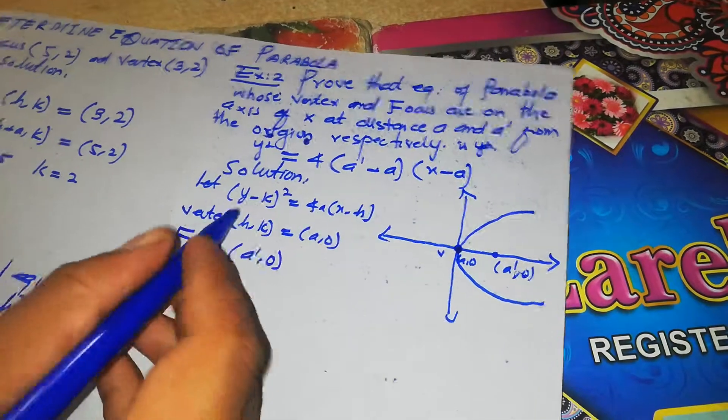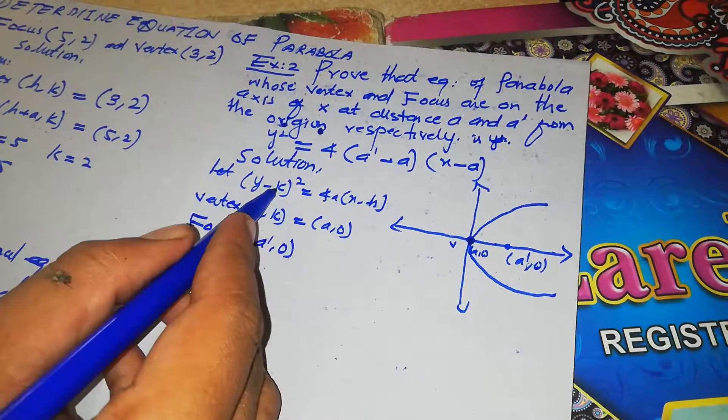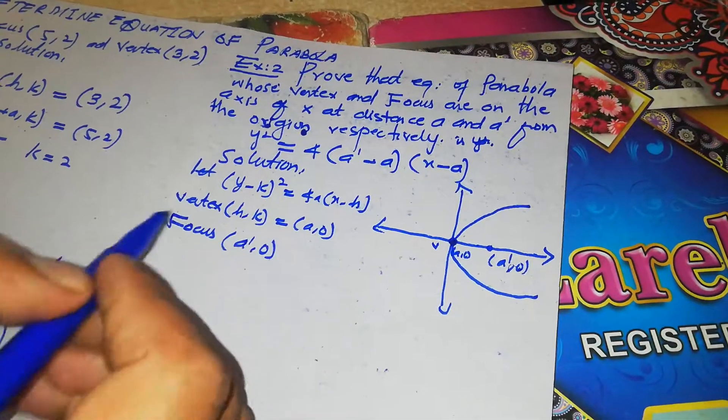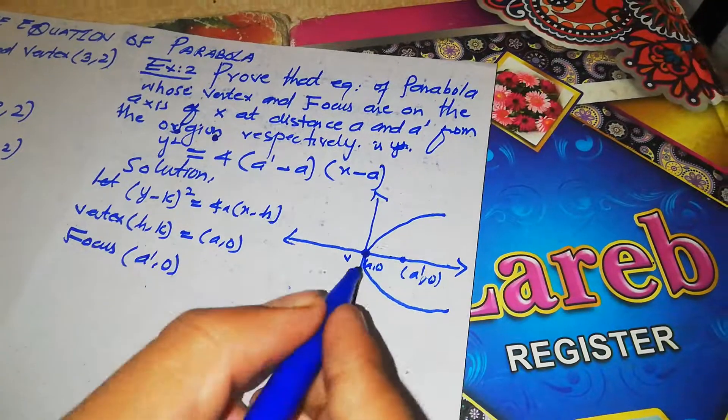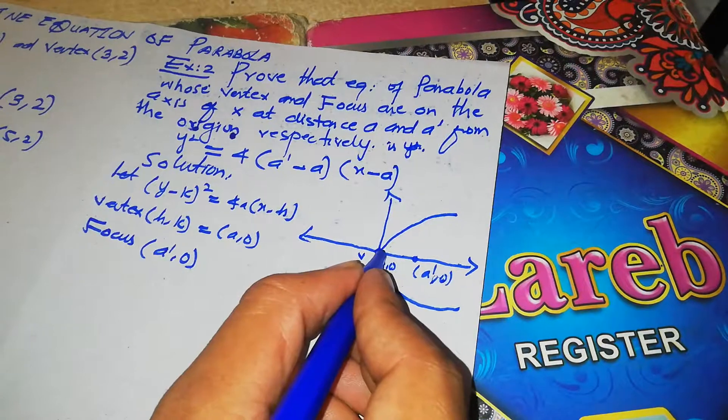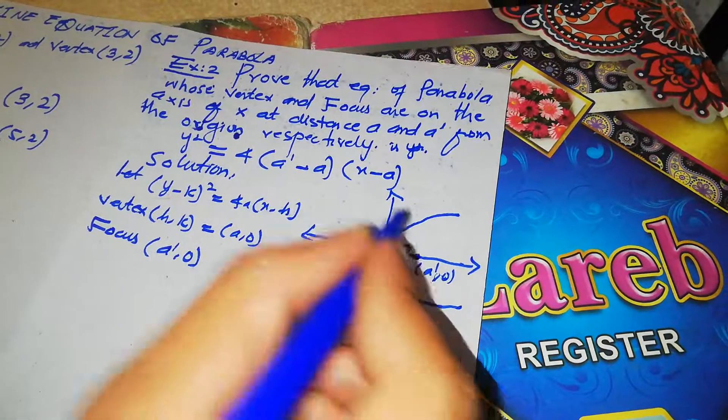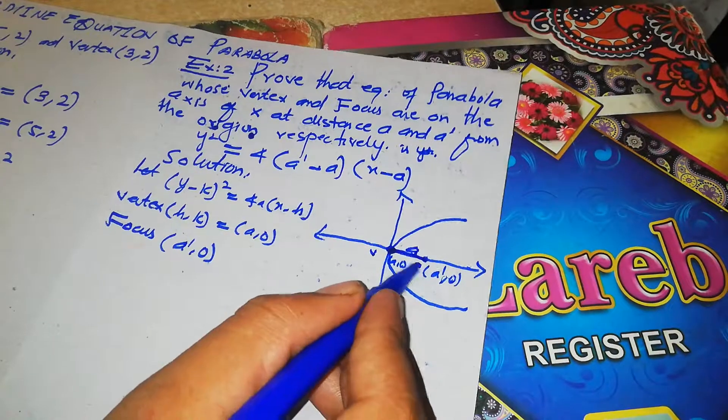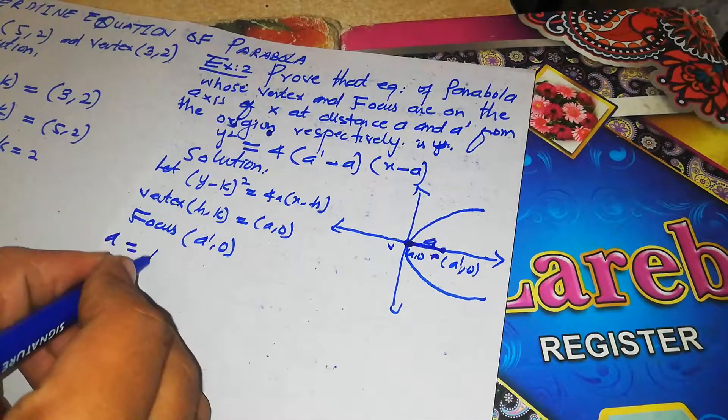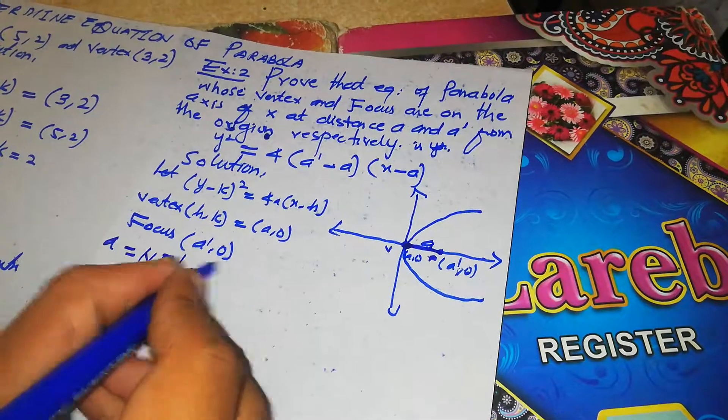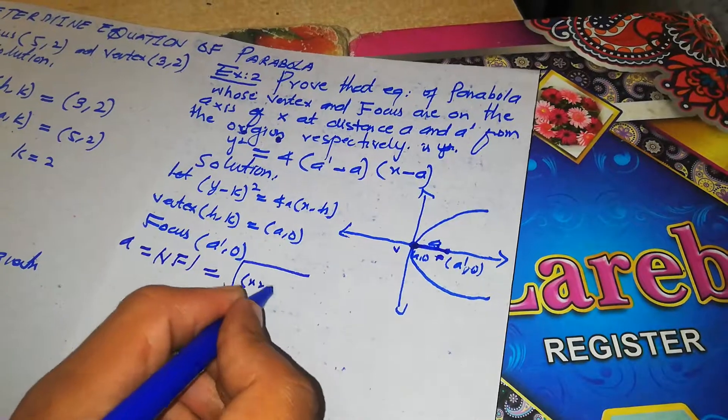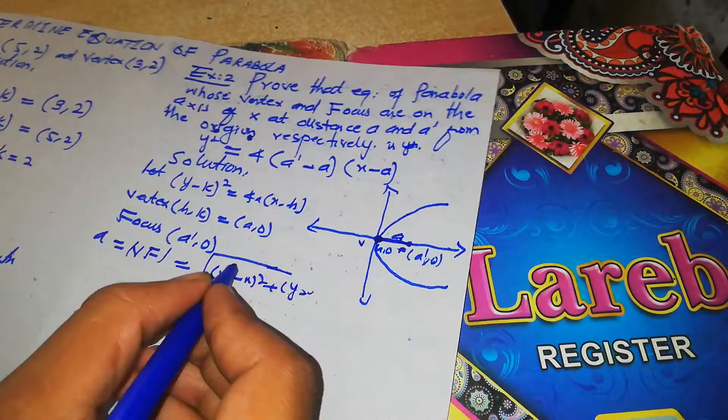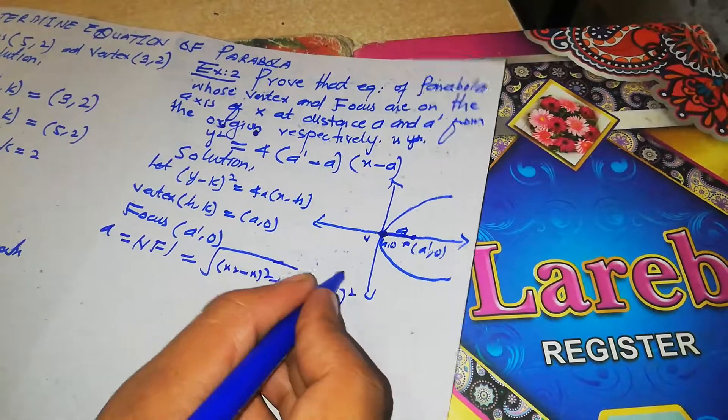Now we have h given and k given. Here we have the distance which is a. We know that this distance from vertex to focus is a, so we will here apply the distance formula: VF equals square root of (x2 minus x1) whole square plus (y2 minus y1) whole square.